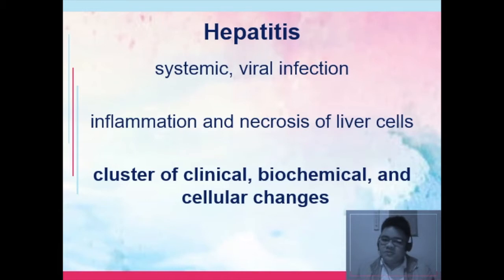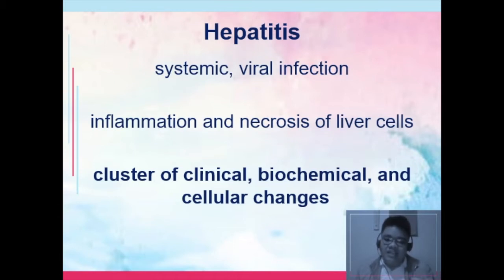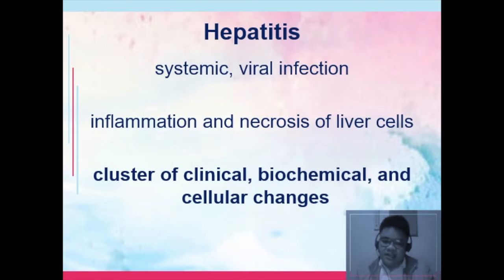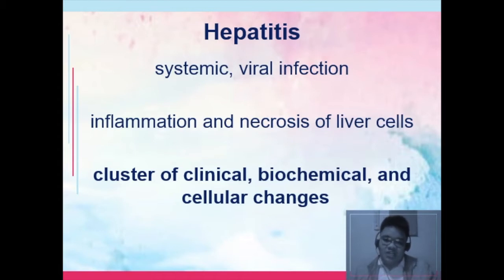When I say hepatitis, this refers to a systemic viral infection which involves inflammation and necrosis of the liver cells. The term 'itis' refers to inflammation. Hepatitis, being a viral infection, is considered to be self-remitting, meaning it is able to resolve on its own even without medications. However, the alarming part is that continuous inflammation could lead to necrosis of the liver cells. One of the sequelae of hepatitis is the development of liver cirrhosis, which is the scarring of your liver tissues.